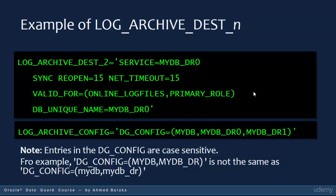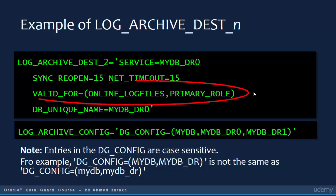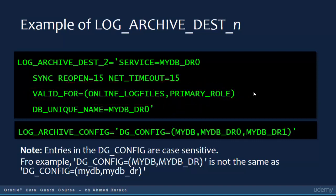Here is a setting example of the LOG_ARCHIVE_DEST parameter. In this example, the standby database is mydb_dr0, and it is using synchronous redo transport. The primary database will wait 15 seconds if the network goes down before trying to reconnect again. NET_TIMEOUT is set to 15 seconds. VALID_FOR is set to online log files and primary role, meaning this destination is used only when the current database is running as a primary database and archiving online redo log files. The DB_UNIQUE_NAME is the same as the service, which is mydb_dr0.